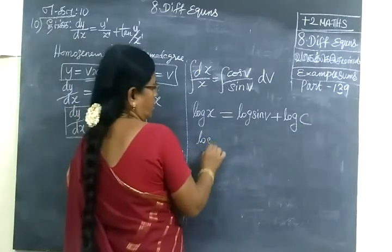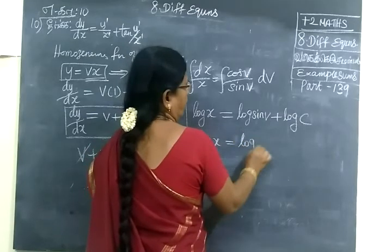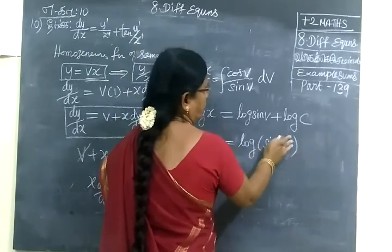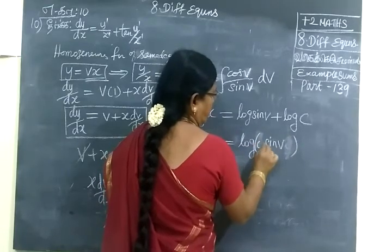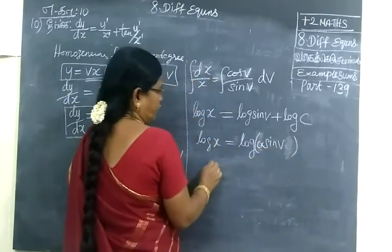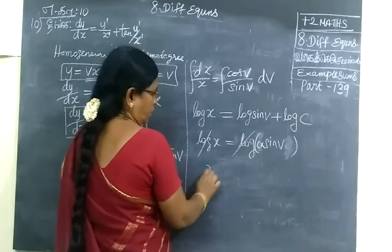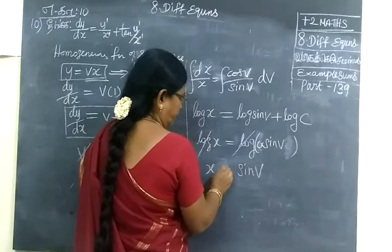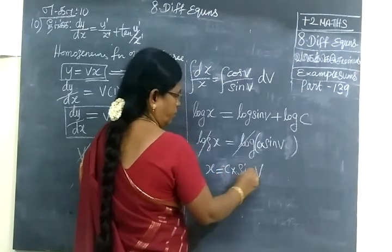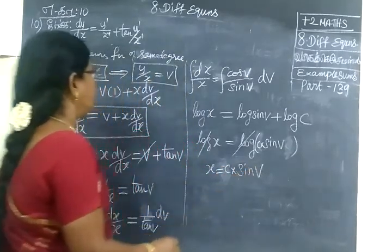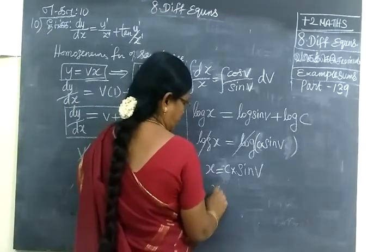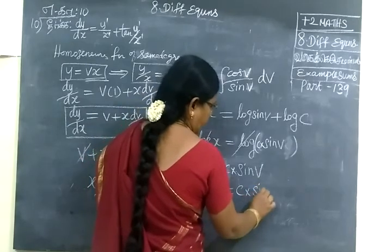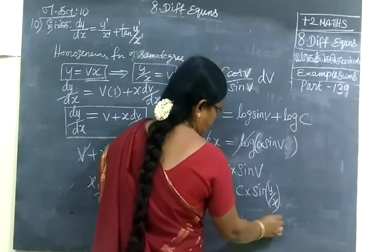So here you write, log x equal to product rule. Product rule equal to sin v into c. This is c. C into sin v. Plot of an item can fly around. So x equal to c into sin v. c into sin v. We want to replace, we can write it as y/x. So x is equal to c into sin of y/x.